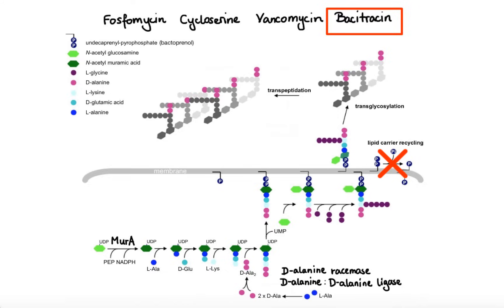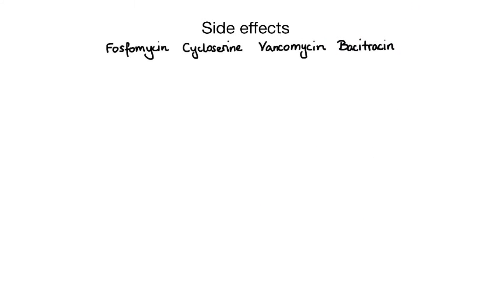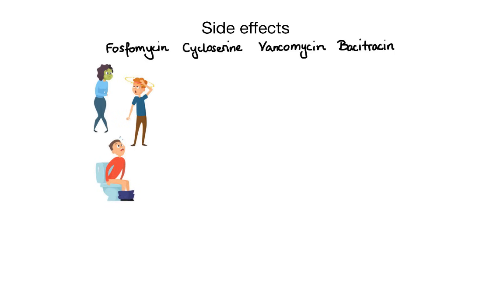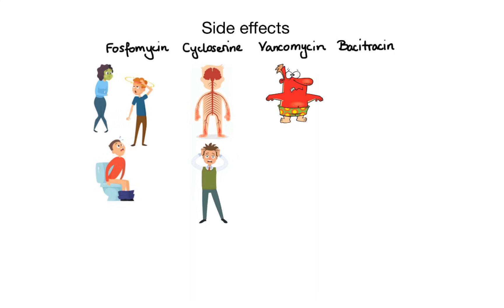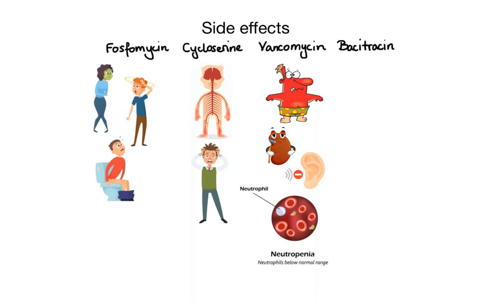Regarding side effects: fosfomycin is most likely to cause nausea, dizziness, headache, and diarrhea. Cycloserine has been associated with neurologic and psychiatric disturbances such as peripheral neuropathy, depression, and psychosis. Vancomycin, when administered intravenously, may cause hypotension along with flushing of the upper body — a condition known as Red Man Syndrome — and in rare instances may also cause nephrotoxicity, ototoxicity, and blood disorders including neutropenia. Bacitracin, when used topically, rarely causes side effects other than minor skin irritation; however, when administered intravenously, nausea, vomiting, allergic reactions, and nephrotoxicity may occur.